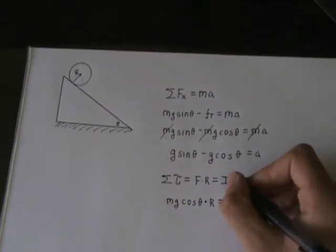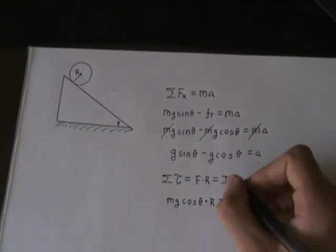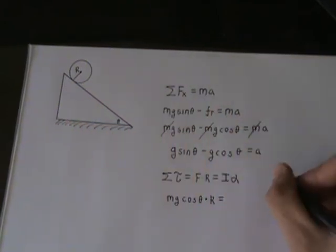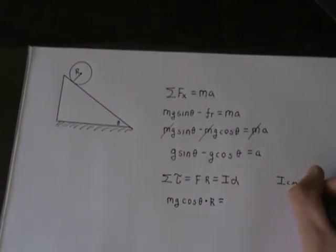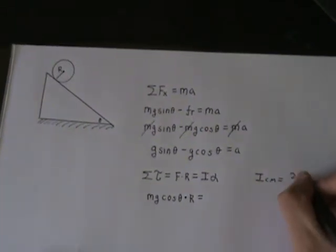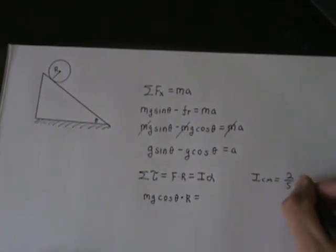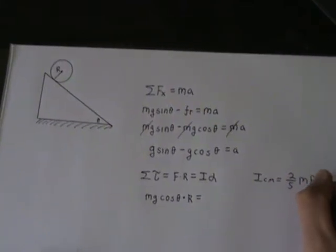The moment of inertia is different for every object. In this case, it's a sphere. Therefore, according to the textbook, the moment of inertia of a sphere to the center of mass is given by 2 over 5, 2 fifths m r squared.